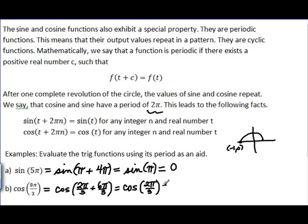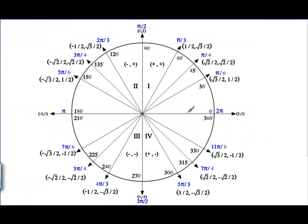Okay, so what is the cosine of 2π over 3? If you need to look back at your unit circle, we can do that, right? The cosine of 2π over 3 is negative 1 half.